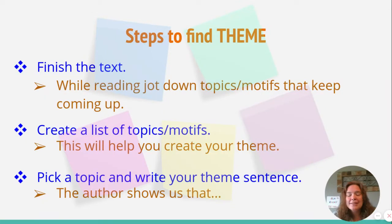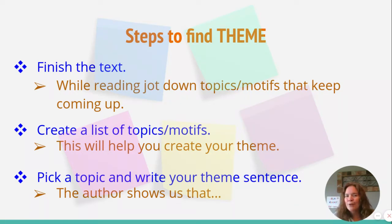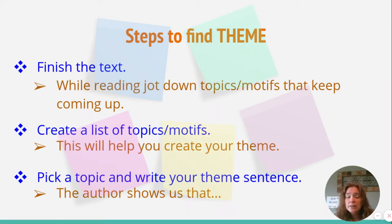So some steps to follow to find your theme. First, you want to finish the text. I know you really want to jump right in and figure out the theme, but that won't really help you. If you have an idea for the theme, write it down — you should not worry if you have to edit or change it, because you're not married to one idea. Your ideas can change throughout the story, as they should while you're reading. While reading, jot down topics or motifs that keep coming up. Create a list of those — they will help you create your theme. Then pick a topic and write your theme sentence using one of those sentence starters.